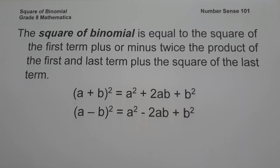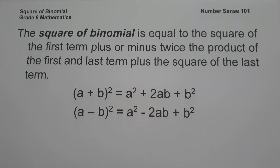For today's video we are going to explain everything in detail on how to square a binomial, and we are going to start with a simple to complex example. When we say a square of a binomial, it is equal to the square of the first term plus or minus twice the product of the first and last term, plus the square of the last term.